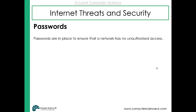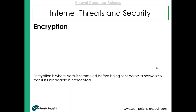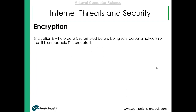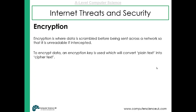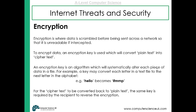Passwords are another security method to prevent unauthorised access to a network. They have to be strong and complex to make them harder to crack under a brute force attack, and they should be changed regularly for similar reasons. Encryption is another really important security method — data is scrambled before being sent across a network so that if it is intercepted, it is unreadable. An encryption key is used to convert plain text into cipher text, perhaps by converting each letter to the next letter in the alphabet. For cipher text to be converted back to plain text, a key is required by the recipient to reverse the encryption, ensuring that any intercepted data cannot be read.